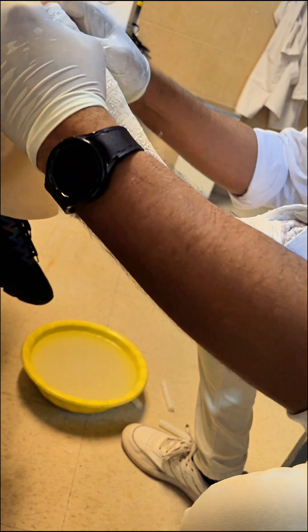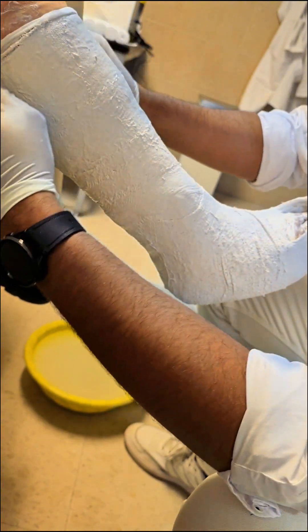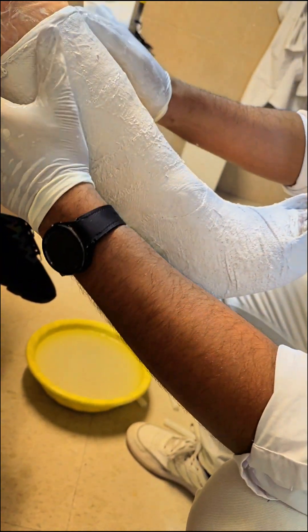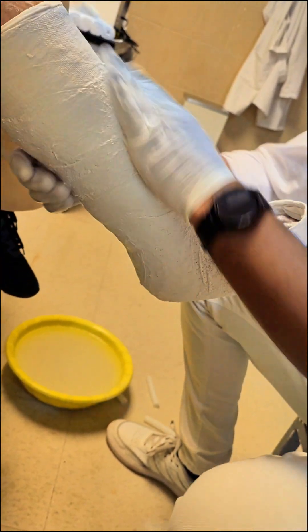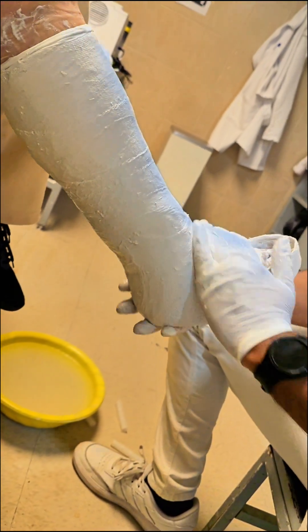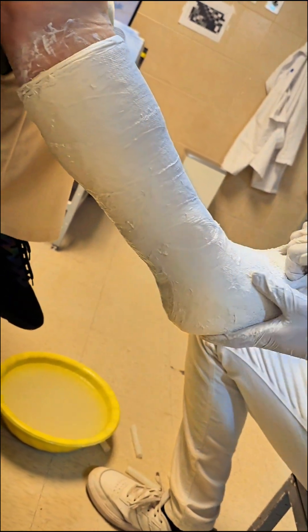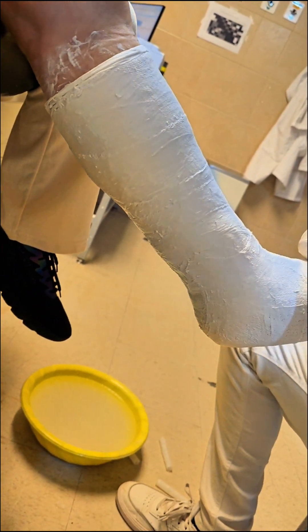Four: reinforcement. As the material hardens, consider adding an extra layer around the heel and ankle for added stability. This reinforcement is essential for preventing movement and ensuring the foot remains fully immobilized. Five: final shaping. Once the material has begun to set, carefully mold it to ensure it provides full support without being too tight. The final cast should be sturdy, providing a solid foundation for the foot to heal correctly.